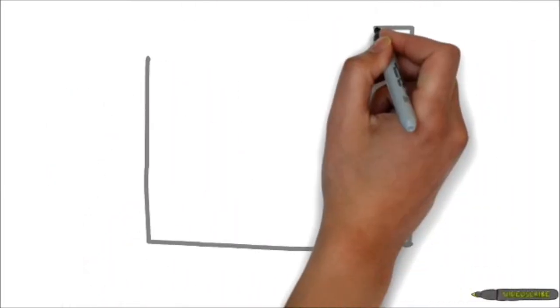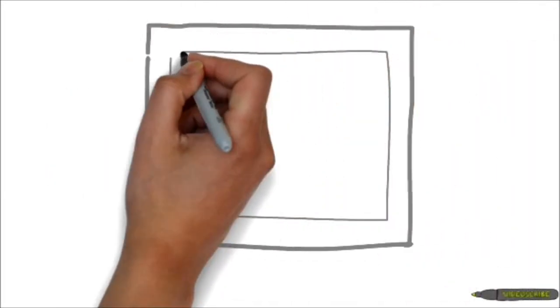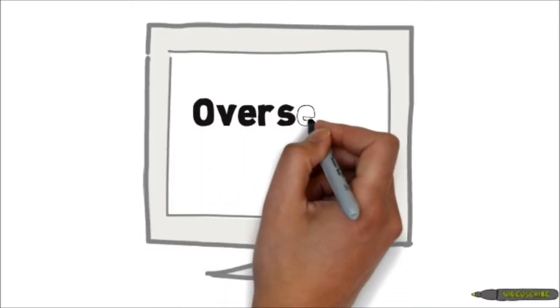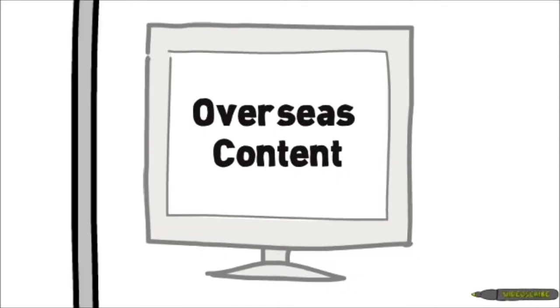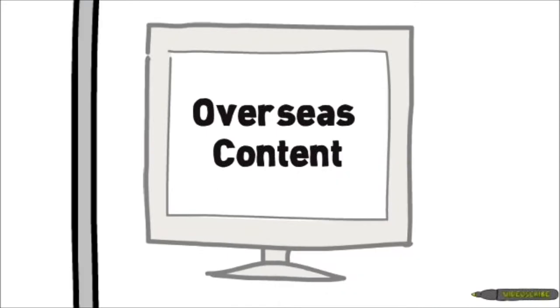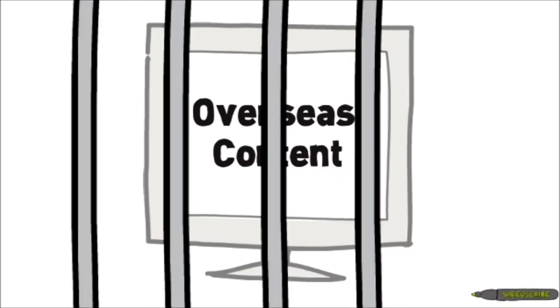This means that only certain people can use these websites. BBC iPlayer is only available in the UK, BBC iView is only available in Australia, and Hulu.com is only available to people in the United States and Japan.